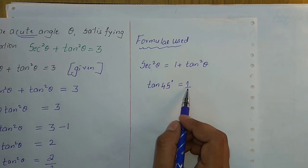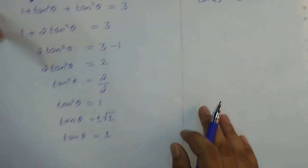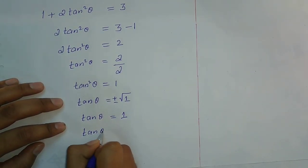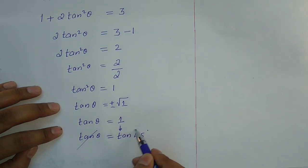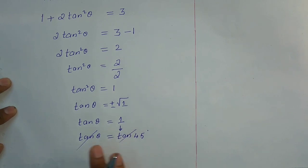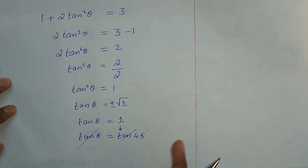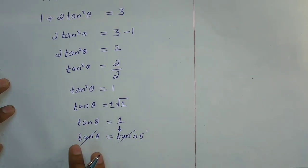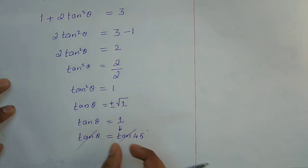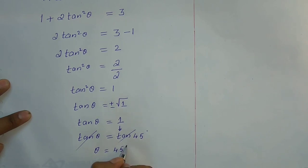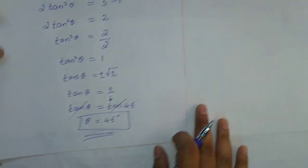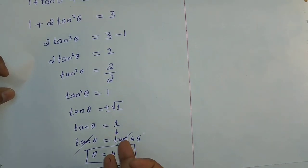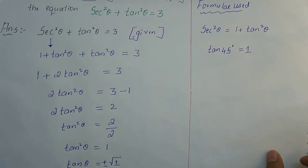Since tan 45° = 1, we substitute: tan θ = tan 45°. Taking inverse on both sides, θ = 45°. So the required acute angle is θ = 45°, which satisfies 0° < θ < 90°.